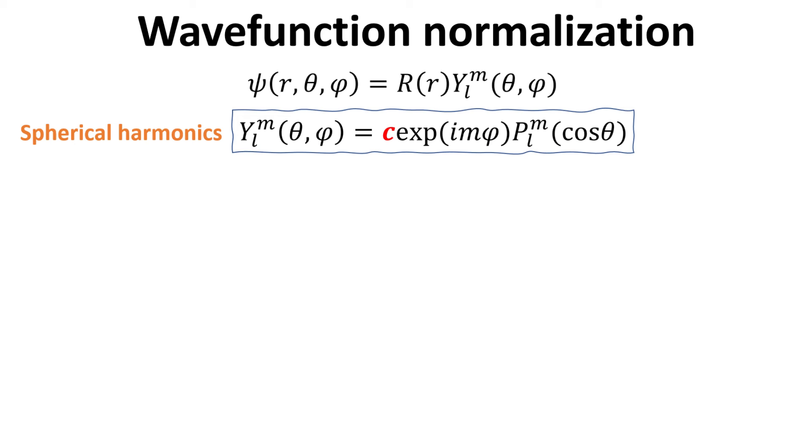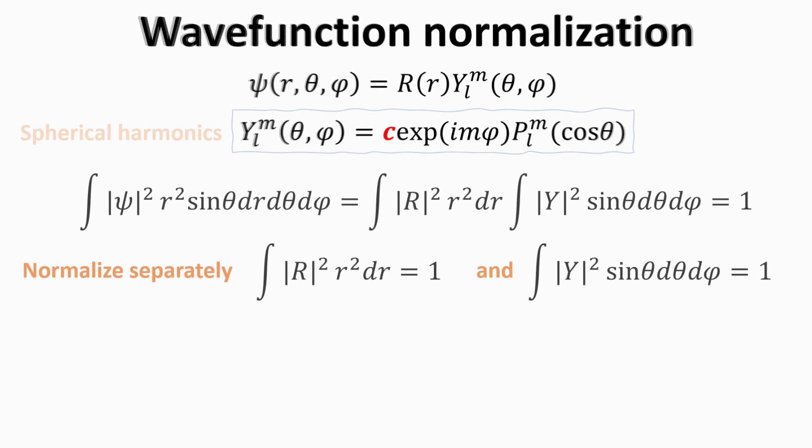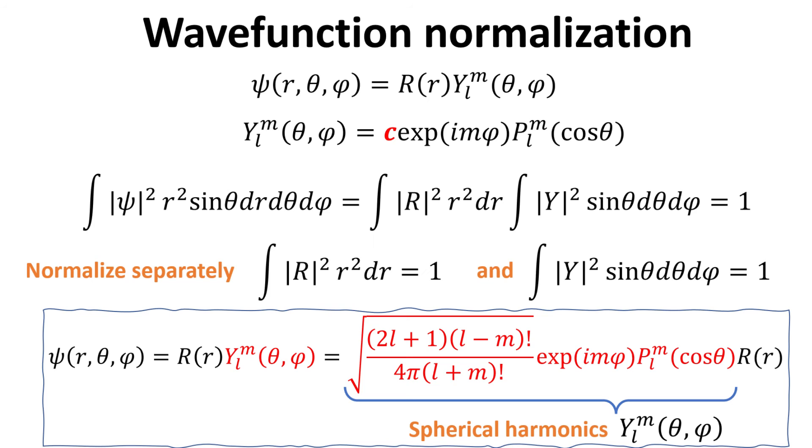What is left now is to determine an appropriate constant c, so that the function y is normalized. We write the normalization condition, using the volume element expressed in terms of spherical coordinates. It is convenient to normalize the function r and y separately as shown. The normalization requirement then allows us to arrive at the final mathematical expression of the wave function.